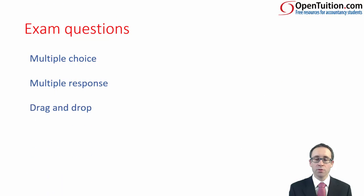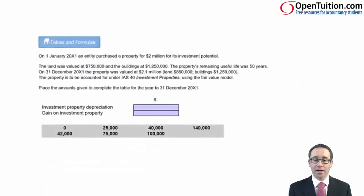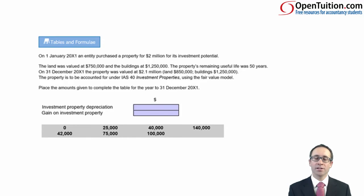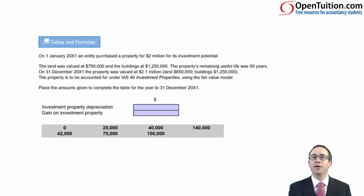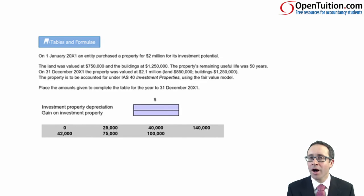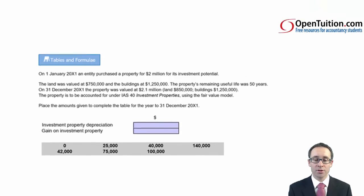As well as multiple response, you also have drag and drop. You have a question and shaded boxes, and you need to drag any one of those numbers into the correct box. You have to drag both correct numbers in to get the right answer. Just be careful — there is a box that says zero, so if you don't think anything should appear within the shaded box, you still have to drag and drop the zero, otherwise you'd get the question wrong. A little harsh, but that's the way the exam works and you will get used to it.